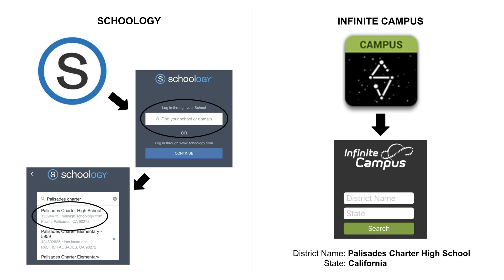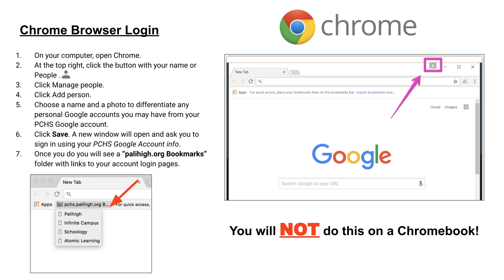For Infinite Campus, there is a parent and student app — students, download the student app. First, search for the district name by typing in 'palisades,' select California as the state, and you'll see Palisades Charter High School as the district. Click on that and you'll get to the right login page to use your credentials.